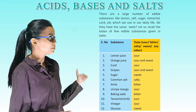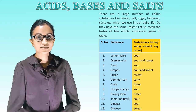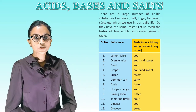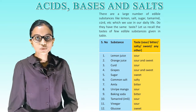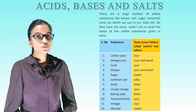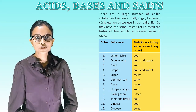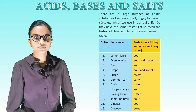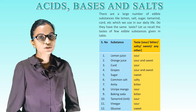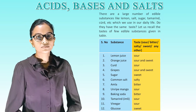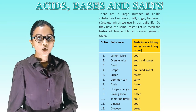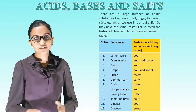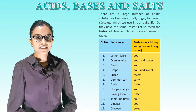So students, are you able to see this table? Serial number, substances, taste — sour, bitter, salty, sweet, any other. Number 1 is lemon juice and the taste is sour. Number 2 is orange juice — sour and sweet. Number 3 is curd — sour. Number 4 is grapes — sour and sweet. Number 5 is sugar — sweet. Number 6 is common salt — salty.